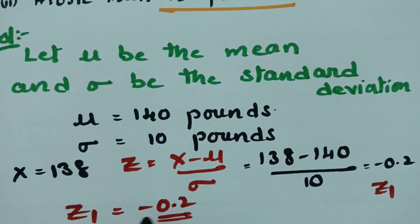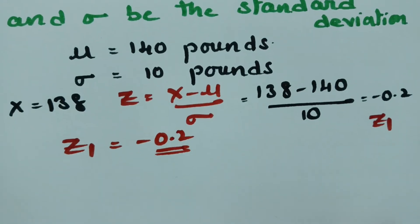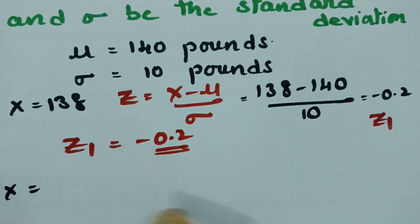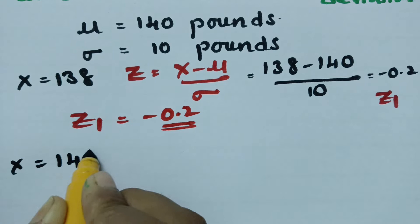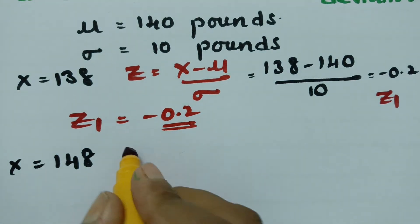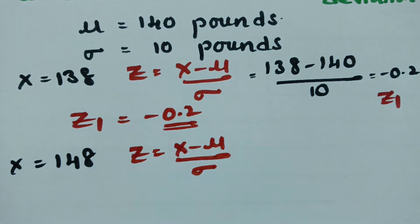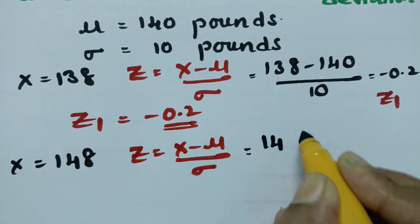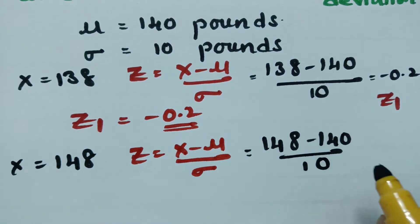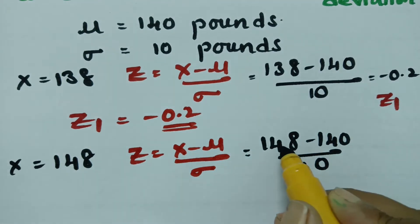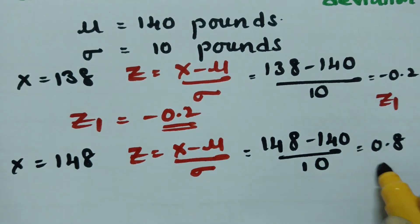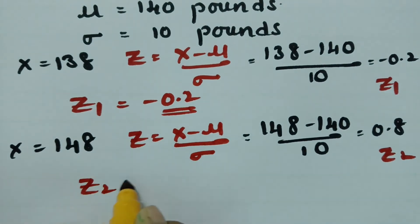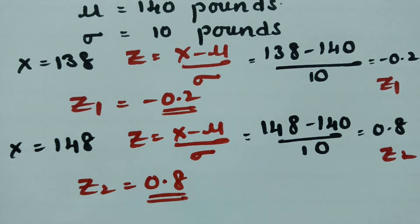Next, taking x = 148. For x = 148, z = (148 − 140) / 10 = 8/10 = 0.8. This is a positive value, let it be z2. We now show this on the normal distribution curve. The curve extends to plus and minus infinity, and when z = 0 is the center, z1 = −0.2 is on the left and z2 = 0.8 is on the right.